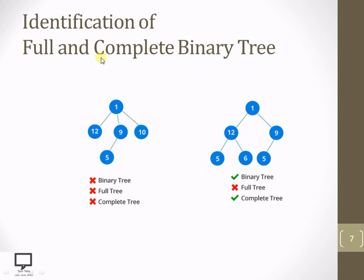Now let's see how to identify a full and complete binary tree. First, a root node having 3 children is not allowed in a binary tree at all — so it cannot be a full or complete binary tree. In the next example, this is a binary tree where every node has maximum 0, 1, or 2 children. But it is not a full binary tree because node 9 has a single child. However, it is a complete binary tree because that single child is a left child, satisfying the condition.